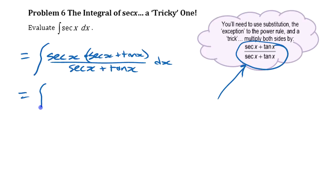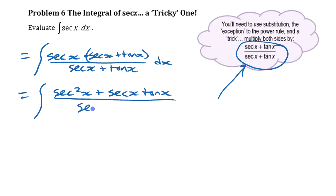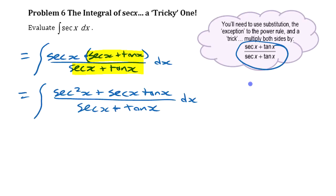When we multiply that out, on the top we're going to have secant squared x plus secant x tangent x, and on the bottom we're still going to have just secant x plus tan x. Multiplying by that over itself doesn't change anything — it keeps it at secant x.